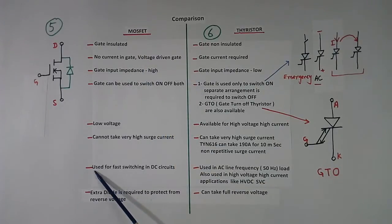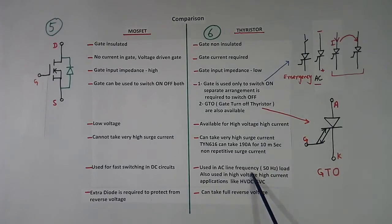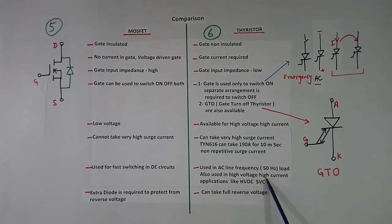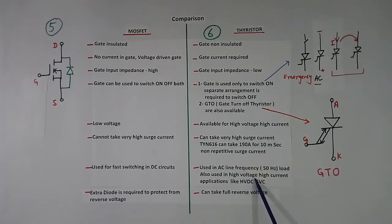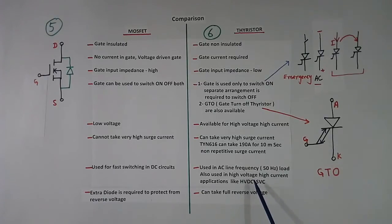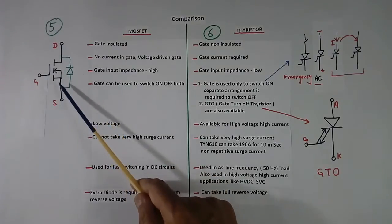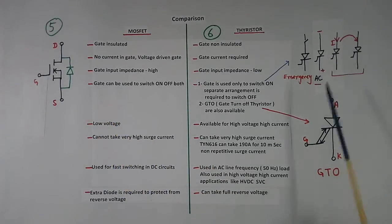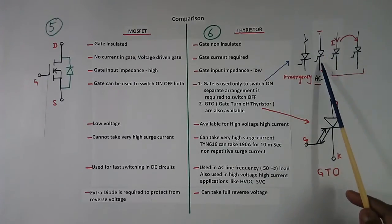MOSFET application: used for fast switching in DC circuits. Thyristor used in AC line frequency — 50 Hz, in some countries 60 Hz — also used in high voltage, high current applications like HVDC and SVC. Once we wanted thyristor for 100 KV and 1000 Ampere, but we had thyristors of 1 KV and 1000 Ampere, so in one HVDC application we connected 96 thyristors in series to make it 100 KV. For MOSFET, extra diode is required to protect from reverse voltage — it cannot take reverse voltage. But thyristor can take full reverse voltage, so no diode is required.